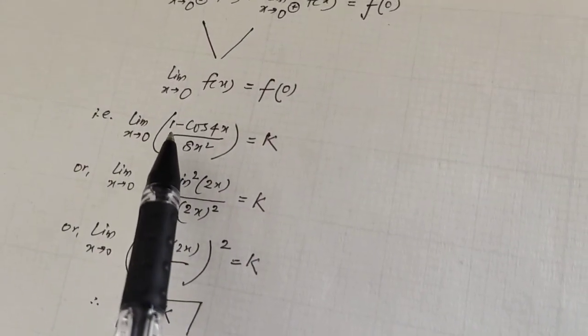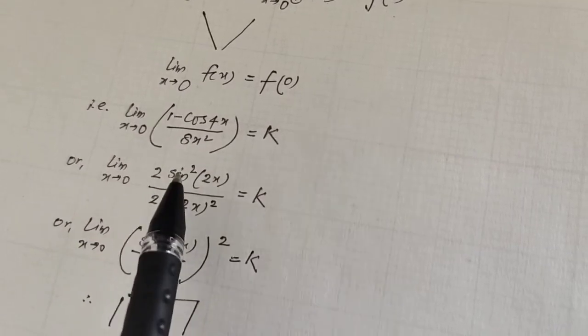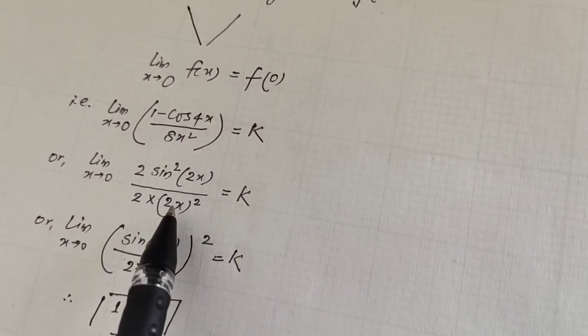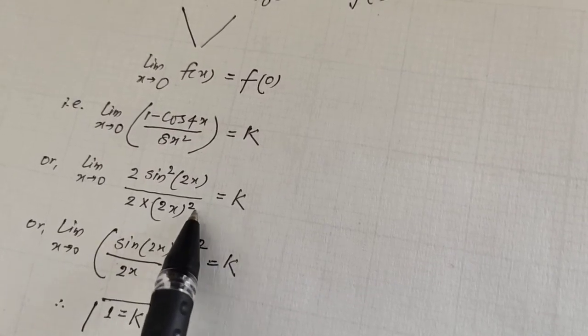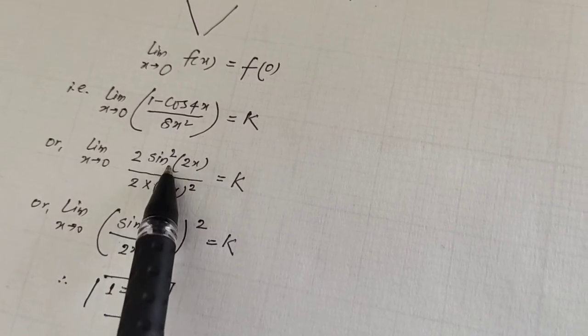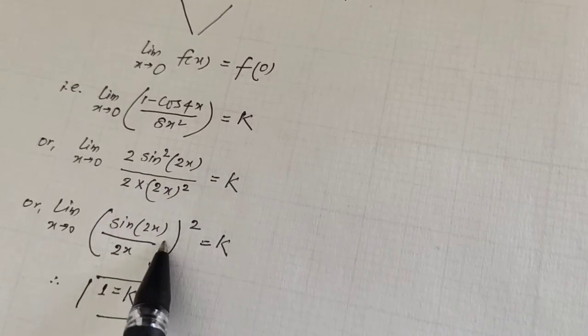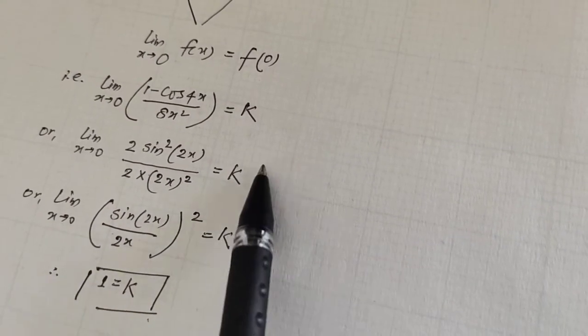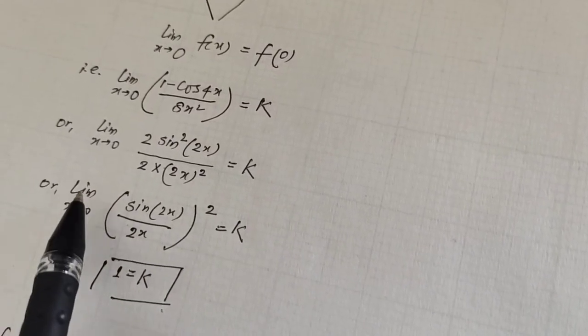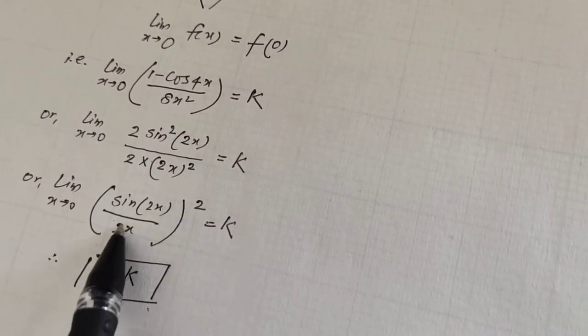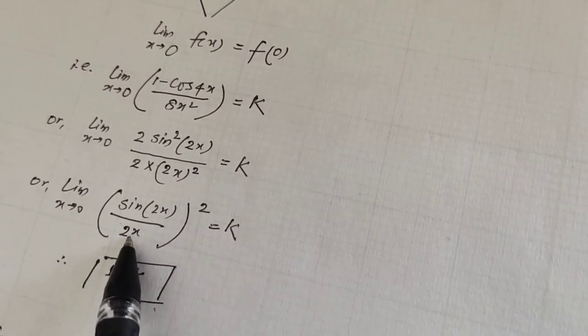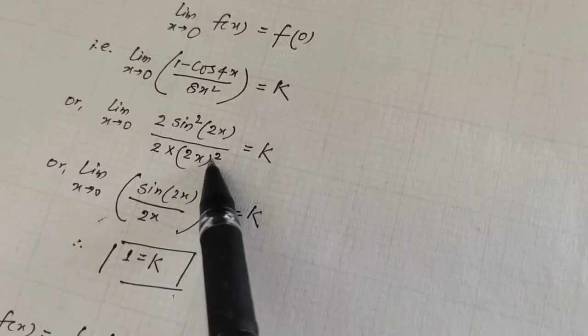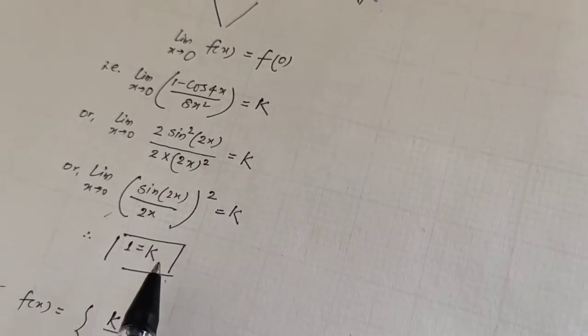We can write 1 minus cos 4x as 2 sin² 2x. So we get 2 sin² 2x divided by 2 times (2x)² equals k. The 2s cancel and we can arrange this to [sin 2x / 2x]² equals k. Since limit x tends to 0 of sin(θ)/θ equals 1, we get 1 squared equals k. Therefore the value of k is 1.